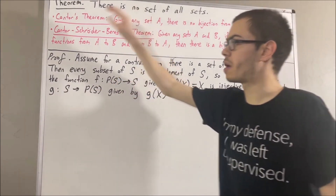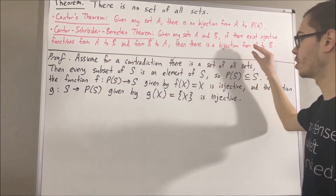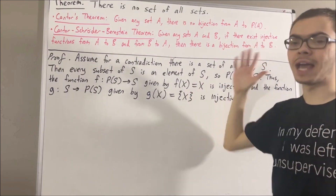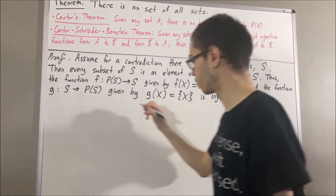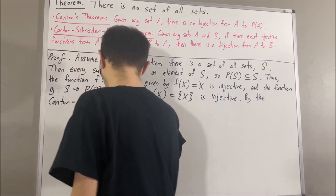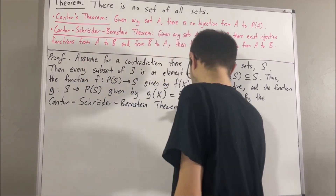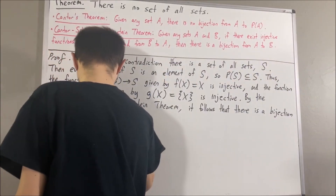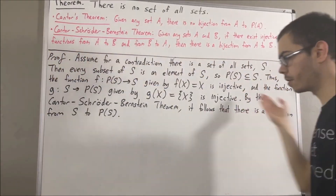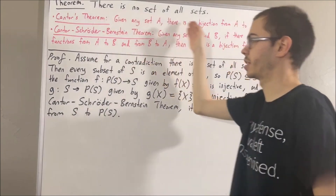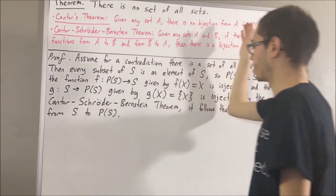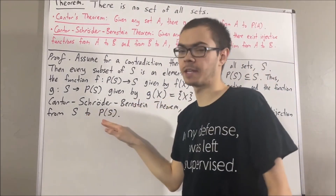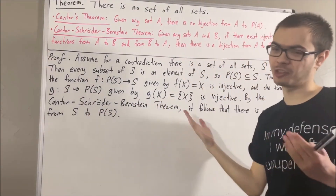We see that there is an injective function from S to the power set of S, and there is an injective function from the power set of S to S. So by the Cantor-Schroeder-Bernstein theorem, there must exist a bijective function from S to the power set of S. But this contradicts Cantor's theorem, which tells us that there is no bijective function from S to the power set of S. So we've reached a contradiction.